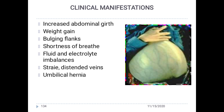Clinical manifestations and signs include increased abdominal girth, weight gain, bulging flanks, shortness of breath, fluid and electrolyte imbalance, striae, distended neck veins, distended veins under the skin, and umbilical hernia.